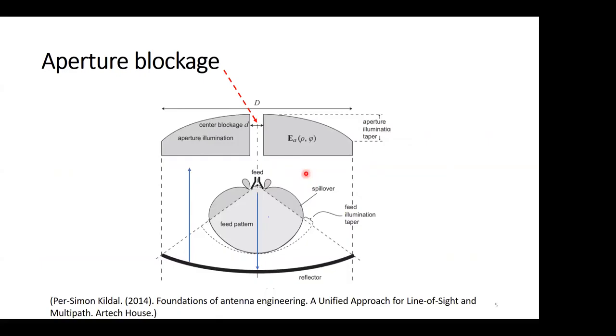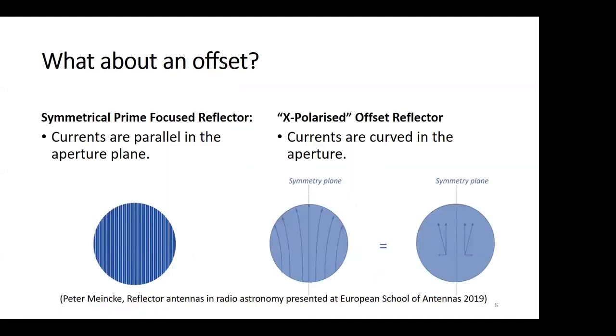Now you would think, okay, what if we just move this feed to an off-axis position? This will definitely reduce the side lobes, but one of the biggest problems with doing an offset design is that you introduce polarization because of the inherent asymmetry.